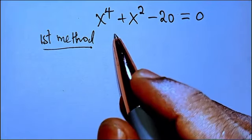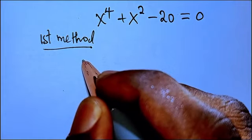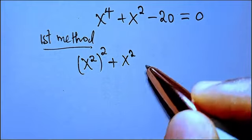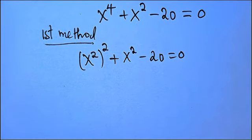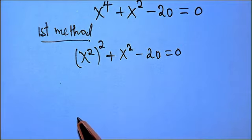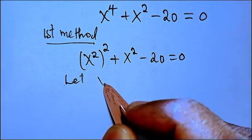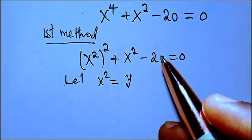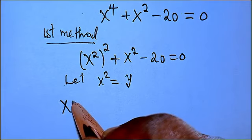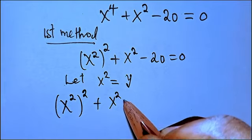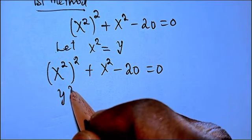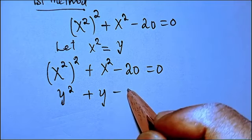For the first method, I can write this equation as x to the power of 2, raised to the power of 2, plus x to the power of 2, minus 20, equals 0. Now let x squared equals y, so therefore anywhere we see x squared we replace it by y. We have y squared plus y minus 20 equals 0.